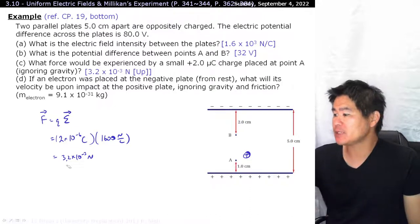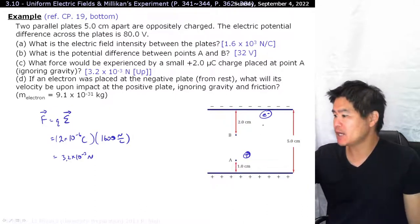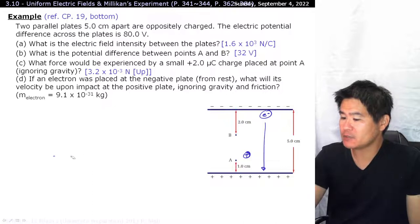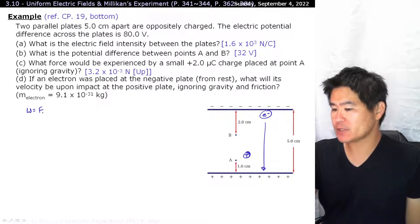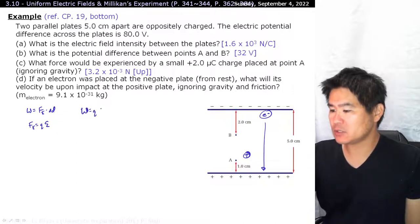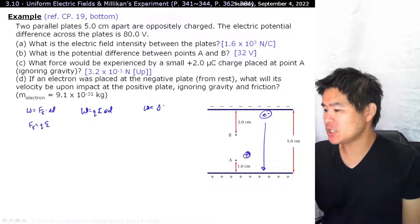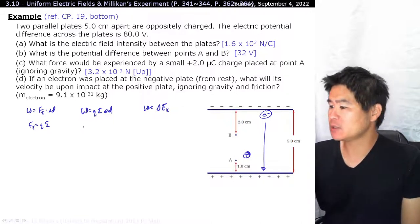If an electron was placed at the negative plate from rest, what will its velocity be by the time it goes and smacks against the positive plate? Good question. And there are many different ways of solving that question. I'm going to do the approach of work. Work we know is equal to force, and this is electric force times the distance that it travels. So the first thing we need to do is figure out what the force is. Work is equal to QE delta D. Why do we want to know this? Because we also know that work by definition is equal to the change in kinetic energy.